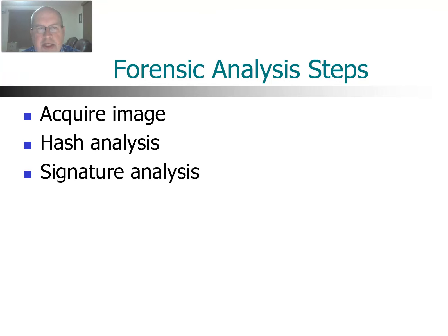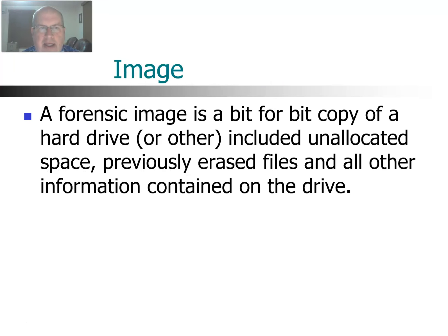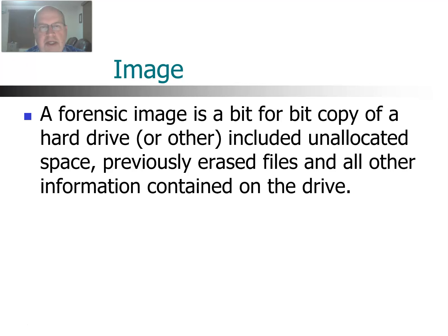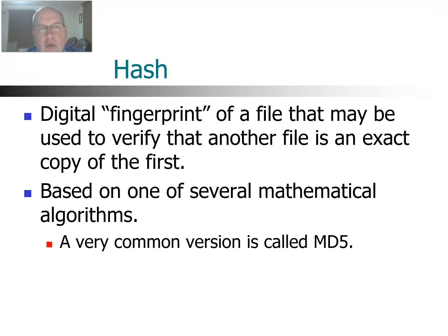Once you create that image — that copy — then you have to go through a hash analysis, and then we'll do some other steps like a signature analysis. An image is a forensic copy, a bit-for-bit copy of a hard drive or other form of evidence, including unallocated space, erased files, any other information that was stored or previously stored on that hard drive, or even areas where nothing is stored. All that information must be copied. Once you make that copy, then you do a hash.